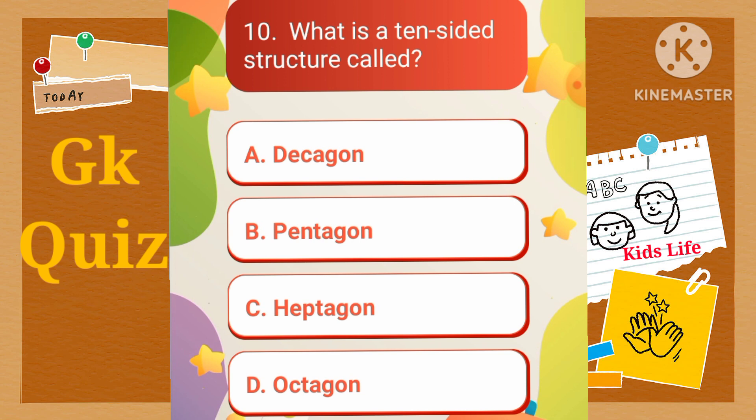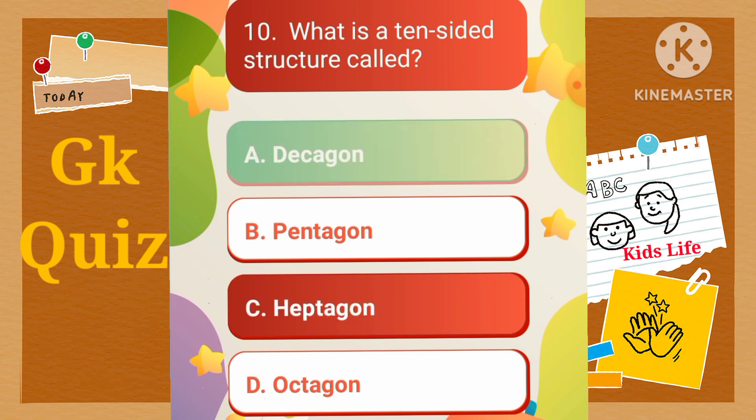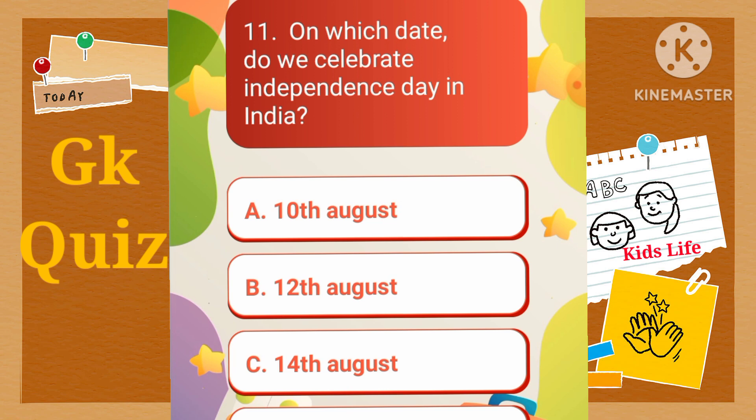What is a ten-sided structure called? A) Decagon, B) Pentagon, C) Heptagon, D) Octagon. On which date do we celebrate Independence Day in India? A) 10th August, B) 12th August, C) 14th August, D) 15th August.